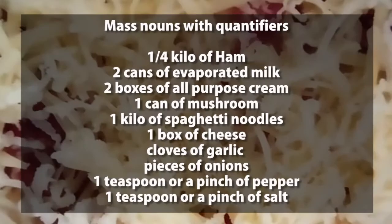So for today, the different mass nouns together with the quantifiers that we used are as follows: one-fourth kilo of ham, two cans of evaporated milk, one can of mushroom, one kilo of spaghetti noodles, one box of cheese, cloves of garlic, pieces of onions, a pinch of pepper, and a pinch or teaspoon of salt.